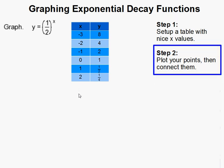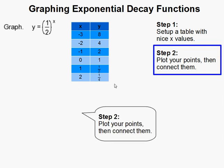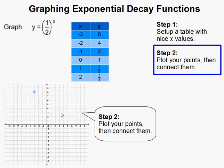So now you just simply plot your points. So this is point 1, negative 3 comma 8. Point 2 is negative 2 comma 4. Negative 1 comma 2. Zero comma 1. One, one half. And 2 one fourth.